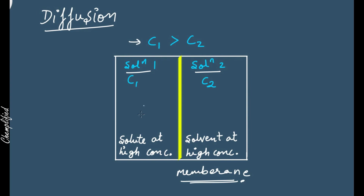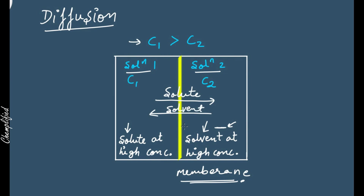In this case, concentration 1 is greater than concentration 2, which means in this container solute is in excess — solute has high concentration — and in this container, solvent is at high concentration, meaning solute is in less amount. So what happens is solute particles will go from solution 1 to solution 2, and solvent particles will move from solution 2 to solution 1.